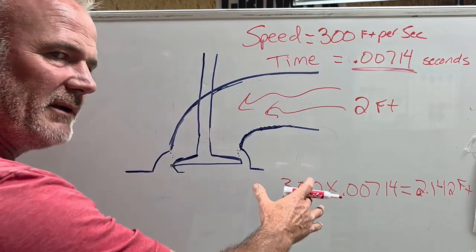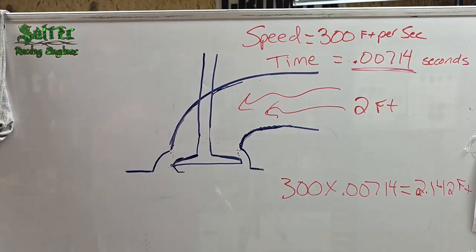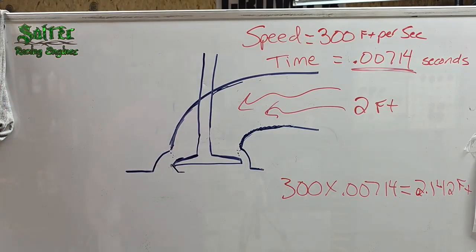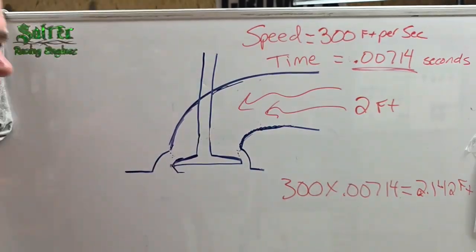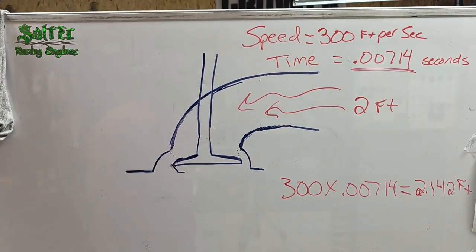This is what it is on paper. This is what it should do. Now, we deal with a dynamically running engine. And what does it actually do? At 7,000 RPMs, that air should move two feet in that port on an intake stroke. Does it move two feet? Honestly, I don't know.